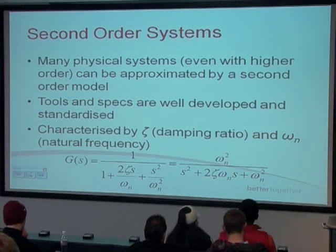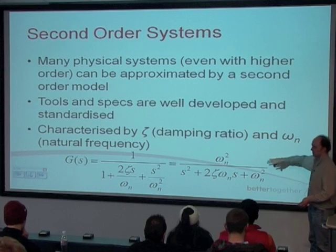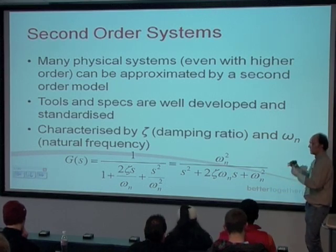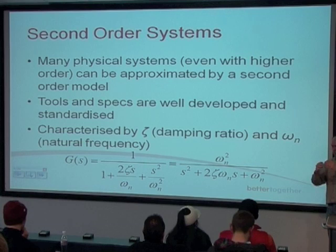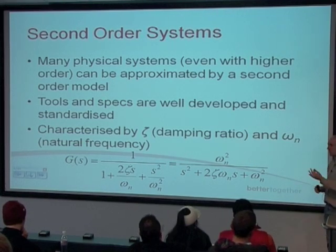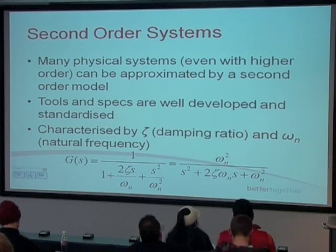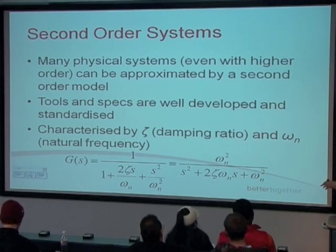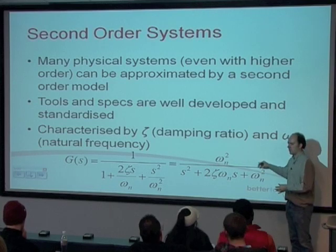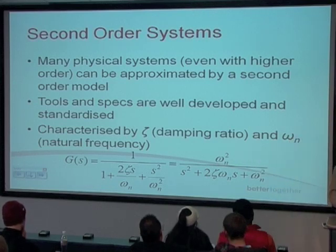What we're going to look at today is the time response for a second order system and the various characteristics or properties that that time response possesses. Your tutorial sheet on Blackboard gives you a whole bunch of transfer functions, and from those you need to determine all the various different characteristics of that time response from the equations. I'll start off by giving you some graphical representation of what those various parameters mean, and then we're going to go through an example of a mass-spring-damper — a generic second order system — and find the different values for the various characteristics of that response.